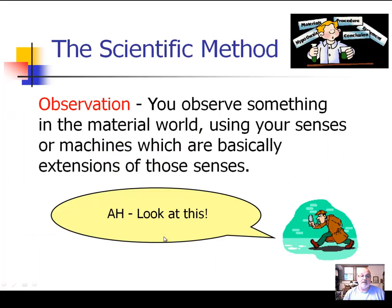Now let's look at each one of these methods one at a time. Observation: you observe something in the material world using your senses. And if your senses can't pick it up — like if you want to hear what a dog hears — you need to use some sort of a machine to help you. You may have to use a microscope or binoculars to see better than what human eyes can see. This is basically extending your senses — being like Sherlock Holmes, observing the best you can.